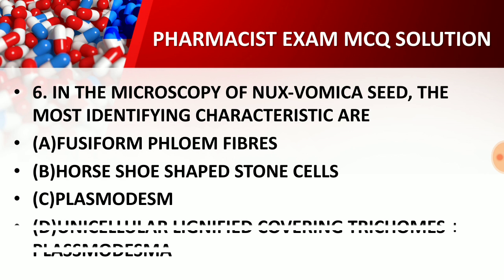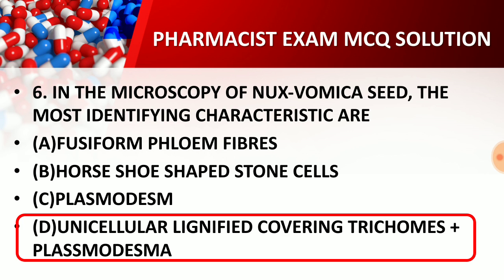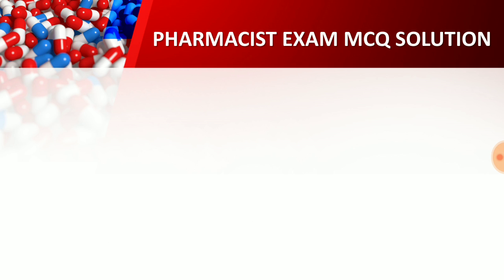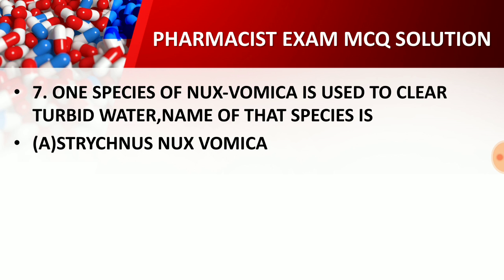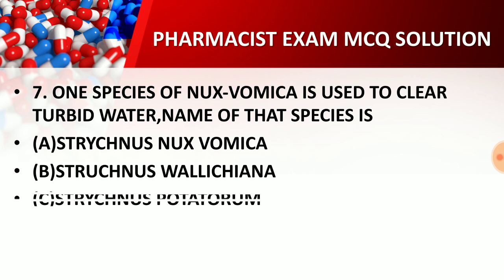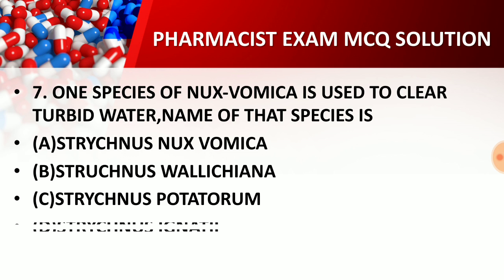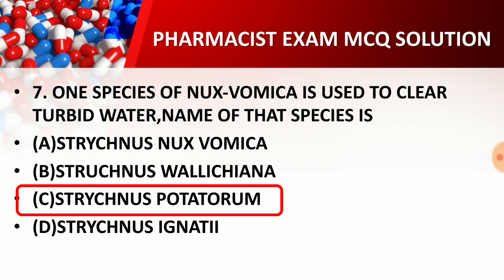Questions six and seven relate to Nux vomica. Nux vomica contains unicellular lignified covering trichomes and plasmodesmata are visible in its microscopic characters. The right answer for the Nux vomica question includes plasmodesma as a key microscopic feature. Nux vomica (Strychnos nux-vomica) is also used to clarify turbid water solutions.